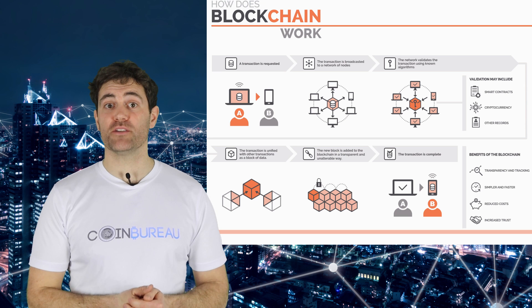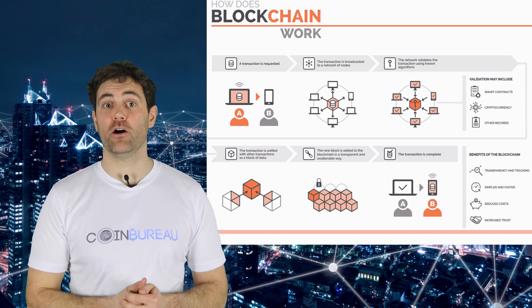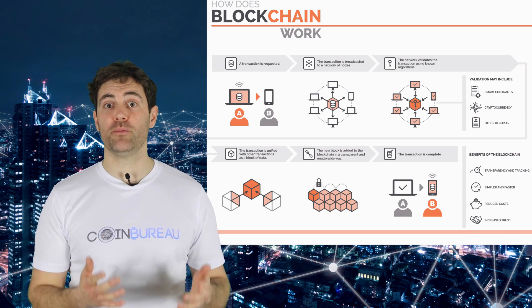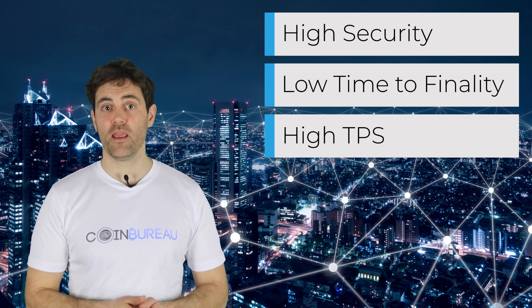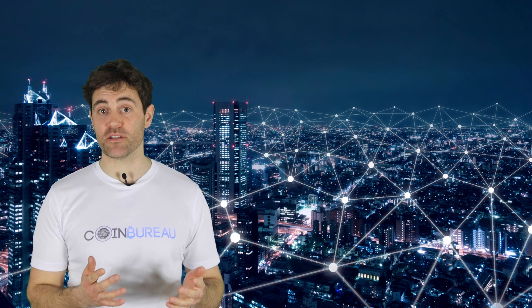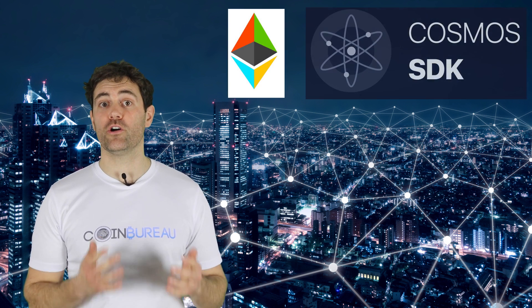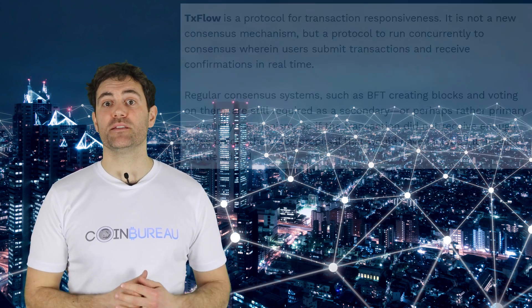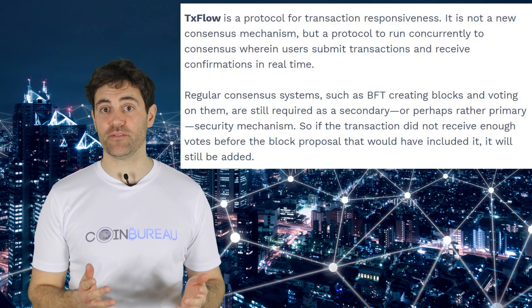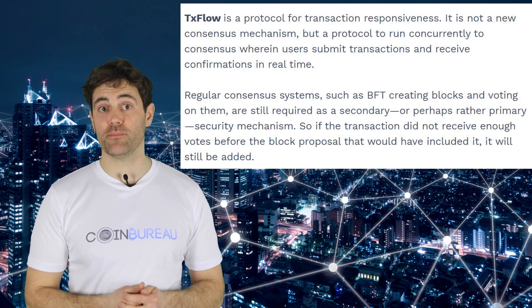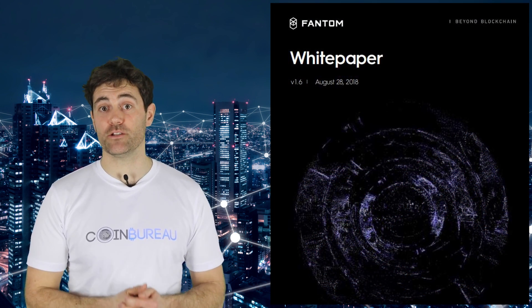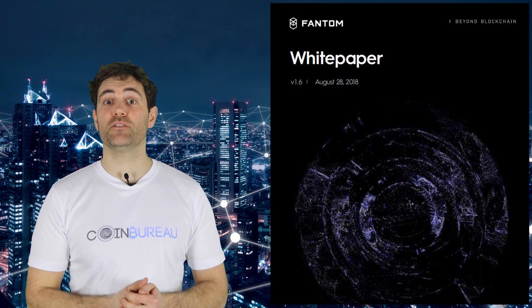This is unlike a blockchain, which requires all blocks to be propagated sequentially and where all nodes must agree on the state of the ledger at every point. A distributed ledger built on this type of consensus provides high security, low time-to-finality, and high transaction throughputs. Fantom developed its ABFT to be flexible and compatible with existing codebases like GoEthereum or Cosmos' software development kit. Part of the consensus algorithm is the TxFlow protocol for transaction responsiveness, built to run alongside the ABFT where users submit transactions while getting real-time confirmations.